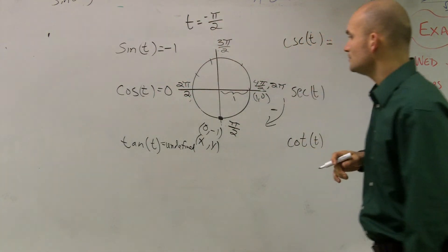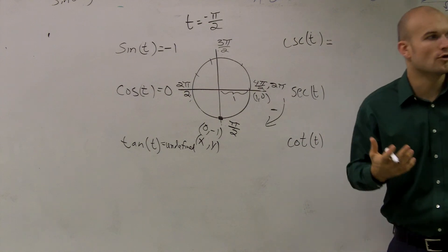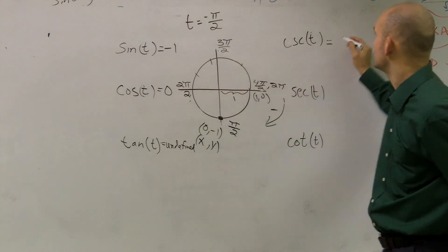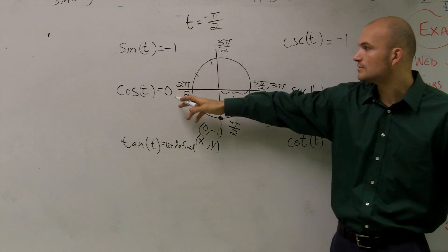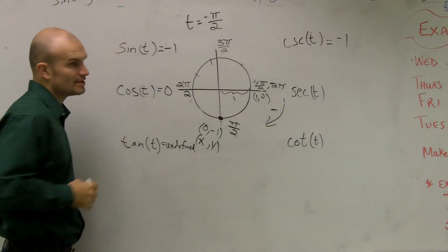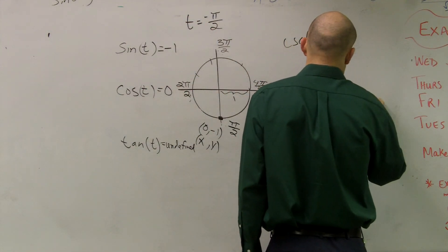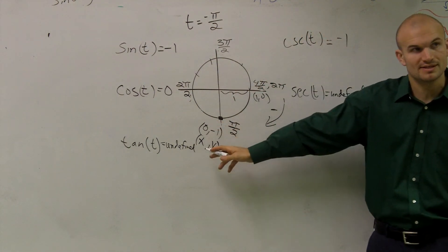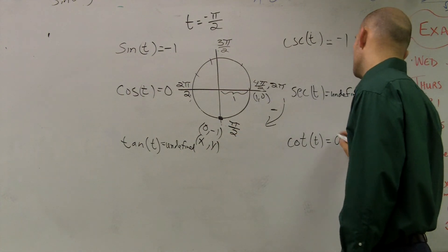Cosecant is going to be the reciprocal. It's going to be 1 over this, which still is going to be negative 1. Secant is going to be the reciprocal of this. So instead of being 0, it's going to be 1 over 0, which is going to be undefined. And then cotangent is going to be the reciprocal of this, which would be x over y. So 0 divided by negative 1, which is? 0.